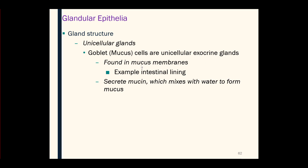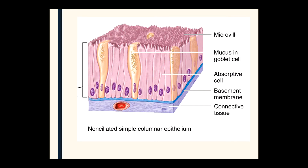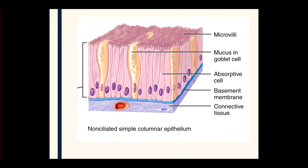We find a lot of goblet cells in different mucous membranes — for example, the lining of the intestines and the respiratory system. These secrete something called mucin, which mixes with water and ultimately becomes mucus. Here's an example: in a simple columnar epithelium with a basement membrane and one row of long, slender cells, you'll find another cell filled with mucus — the goblet cell. The mucus is released out onto the top of the epithelium to keep the tissue moist, which helps these cells do more absorption.